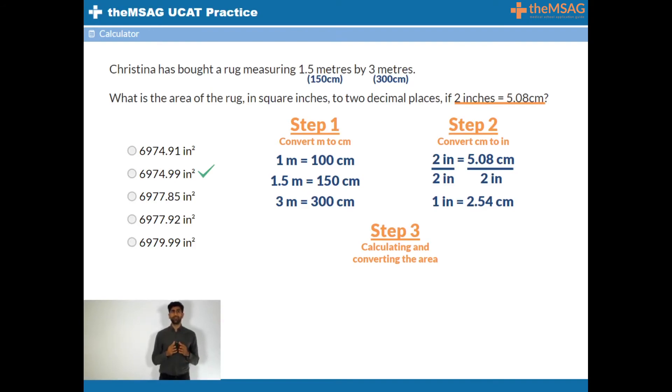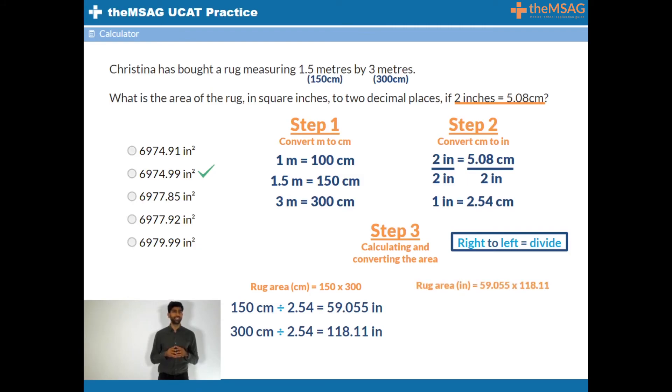Now follow the normal steps. To convert centimeters to inches, for example 150 centimeters into inches, we're going to go from right to left so we divide. 150 divided by 2.54 equals 59.055. We need to be accurate as the answer choices are close together. 300 divided by 2.54 equals 118.110. If Christina's rug measures 59.055 by 118.110, its area is 59.055 times 118.110, which equals 6974.99 square inches.